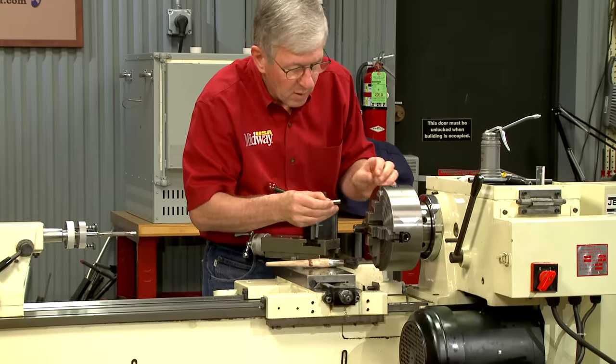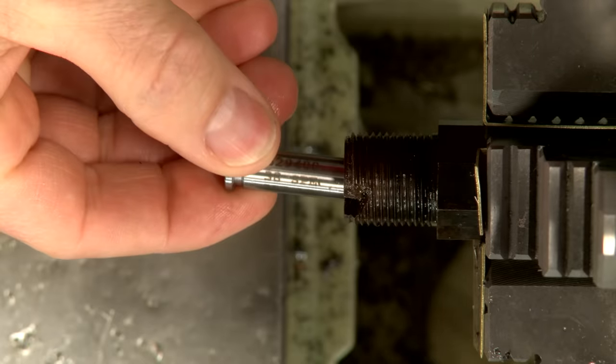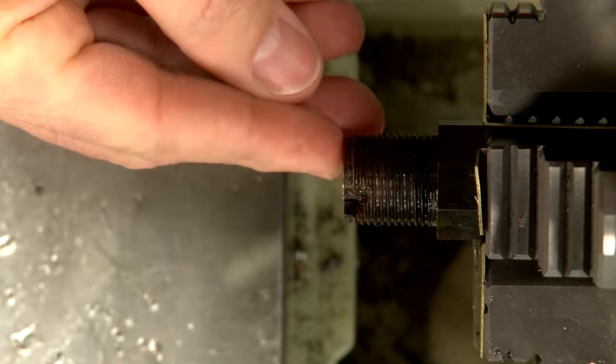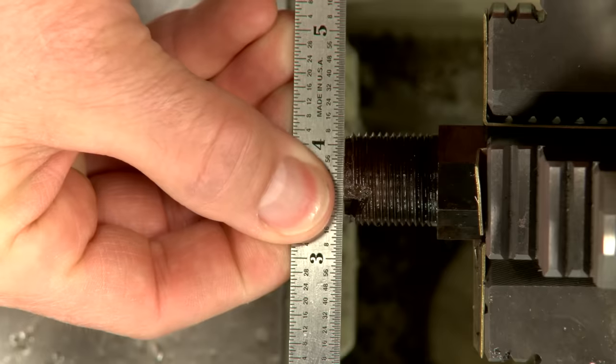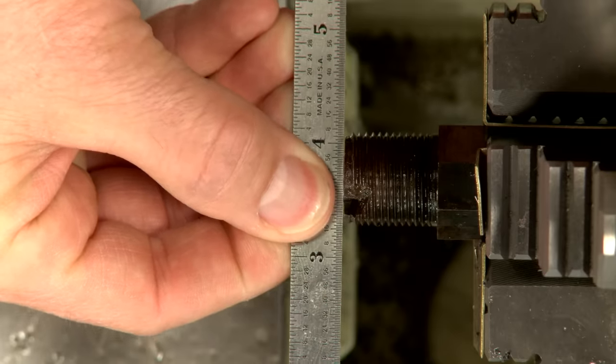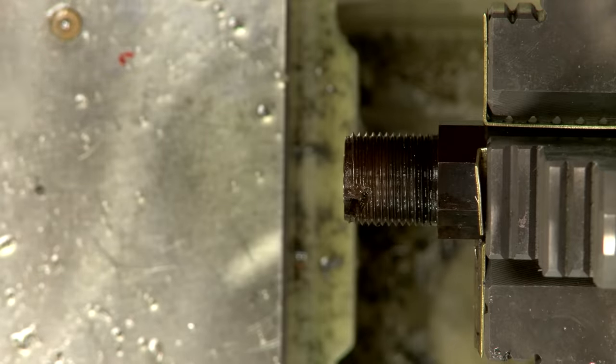As I get closer I'll check my progress with a go gauge which should end up just flush with the back of the barrel. Since the barrel makes contact with the breech block this will give me the correct headspace.